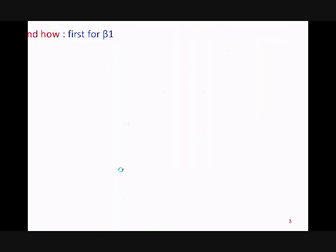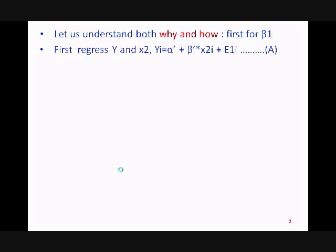First for β1, then for β2. For getting the regression coefficients, let's first regress y and x2. Please note β1 is the partial regression coefficient of x1. Here you are going to get y equal to α plus β, as you are seeing on screen, and E1 which is the error term.